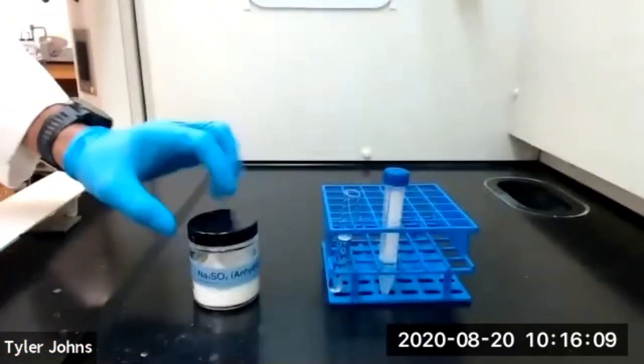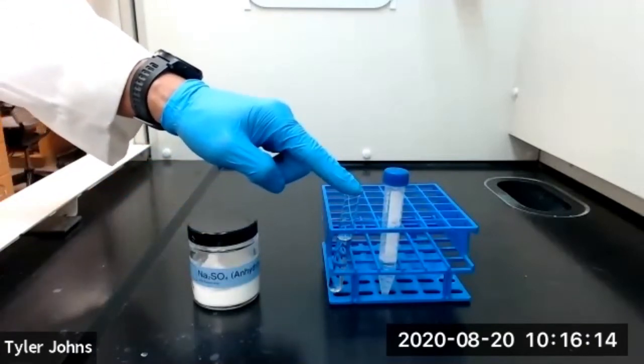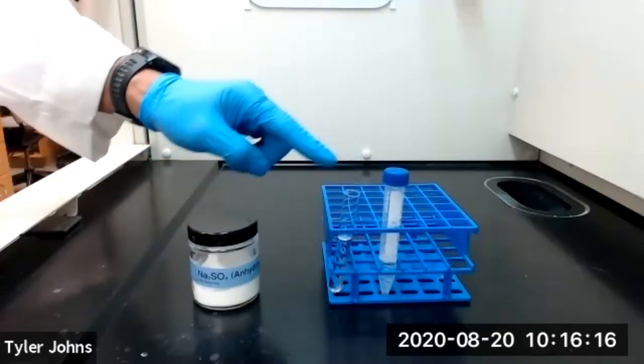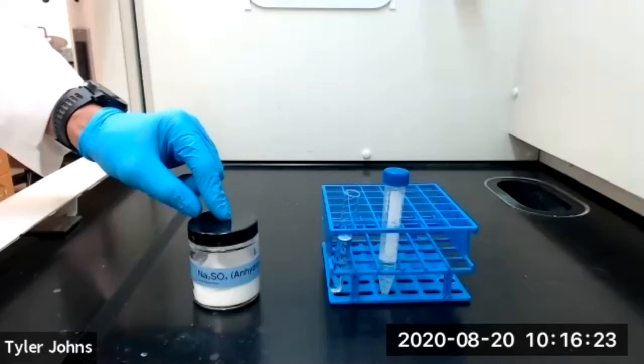We'll add anhydrous sodium sulfate to our organic layer until the sodium sulfate is free-flowing and no longer clumps. This will indicate that our organic layer has been completely dried.